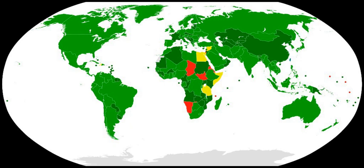The United States Congress passed the Bioweapons Anti-Terrorism Act in 1989 to implement the Convention. The law applies the Convention's commitments to countries and private citizens, and criminalizes violations of the Convention.